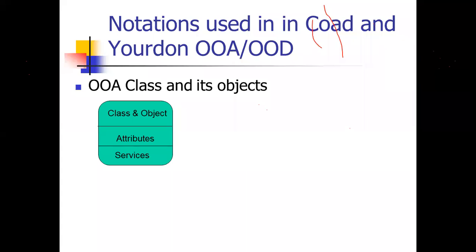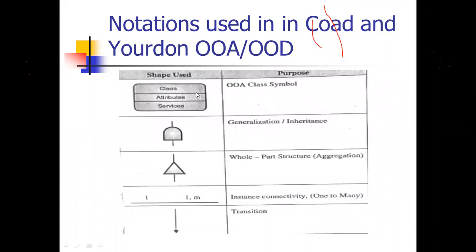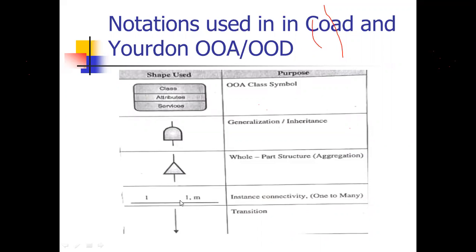The notations used in the Coad-Yourdon method include: the class-and-object notation, consisting of the class name, attributes, and services; the class symbol notation; the generalization or inheritance notation; the whole-part notation used for aggregation; the association notation showing instance connectivity from one to many; and transitions between instances and classes.